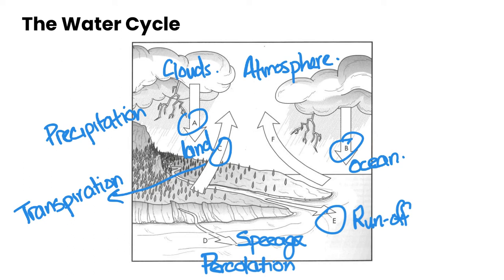Now because the sun is warm, we have solar radiation, and that causes the water from the oceans to evaporate back into our atmosphere. So label F here is called evaporation.